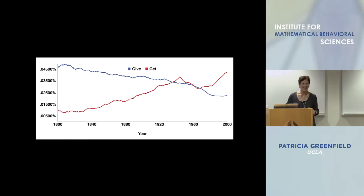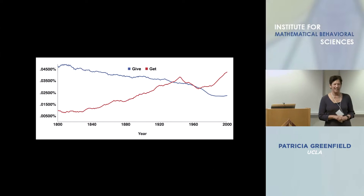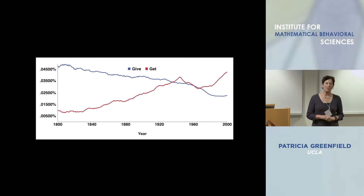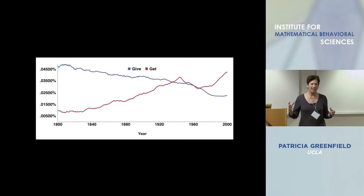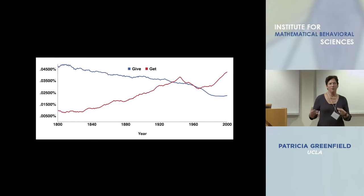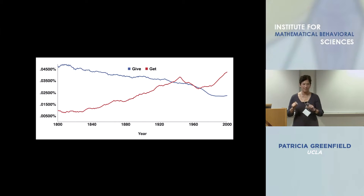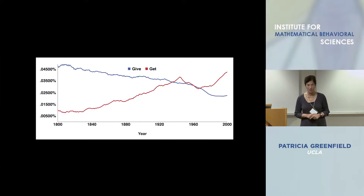The books come from major libraries — for example, the UCLA Library, the University of Michigan Library, the Oxford Library. I'm going to get into the methodological issues after I talk about the Chinese data.